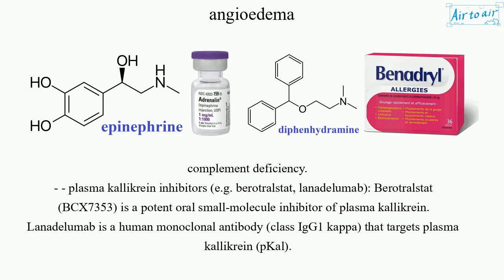Plasma kallikrein inhibitors, e.g. berotralstat, lanadolumab, BCX7353, a potent oral small molecule inhibitor of plasma kallikrein. Lanadolumab is a human monoclonal antibody, class IgG1-kappa, that targets plasma kallikrein (PKAL).